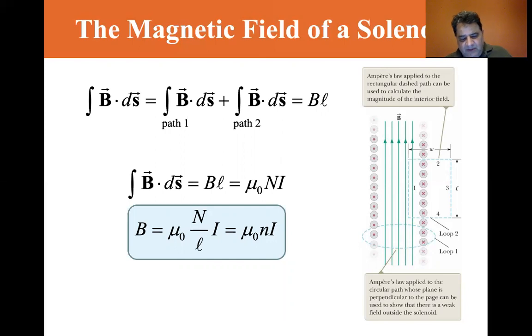So B equals mu zero I times N divided by L, or the small n, which is just the number of turns per unit length. Little n is equal to the number of turns per unit length, which is big N divided by L.